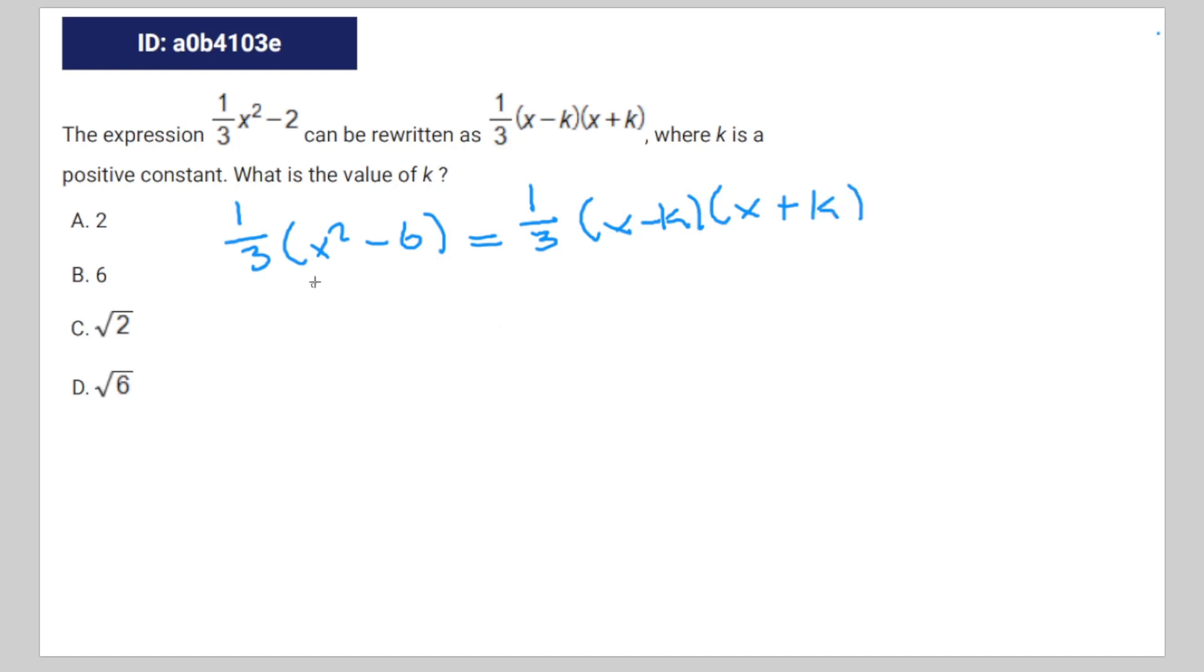You can multiply both sides by three, so you get x squared minus six is equal to x minus k times x plus k.